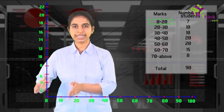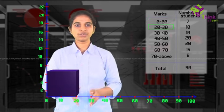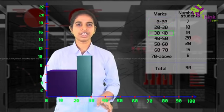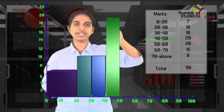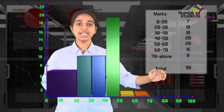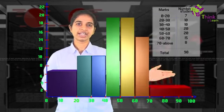Let's draw the bars now. 0 to 20: 7 students. 20 to 30: 10 students. 30 to 40: again, 10 students. 40 to 50: 20 students and so on. 70 to 100: there are 8 students.